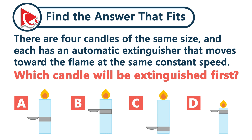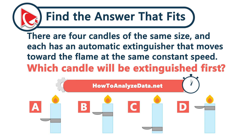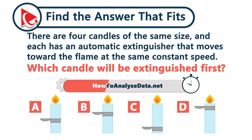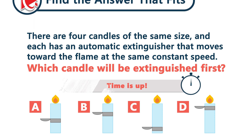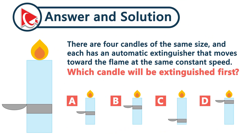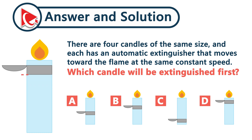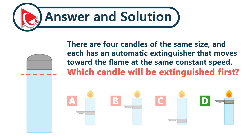There are four candles of the same size, and each has an automatic fire extinguisher that moves toward the flame at the same constant speed. Which candle will be extinguished first? Look at the distance between each extinguisher and its flame — which one has the shortest path? The correct answer is choice D.